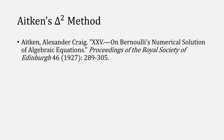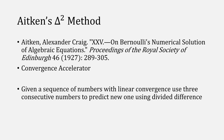Let's start with Aitken's delta squared method. It was first published in 1927 and is known as a convergence accelerator. The main idea is that given a sequence of numbers with linear convergence, you can use three consecutive numbers to predict the next one.